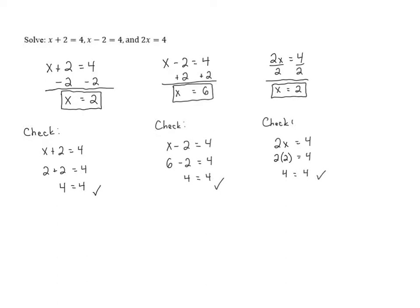In each of these problems, the goal was to get x alone. However, the steps it took to get x alone were different in each problem. In the first problem, we subtracted 2 from both sides to get rid of the 2 being added to x. In the second, we added 2 to both sides to get rid of the 2 being subtracted. In the third, we divided both sides by 2 to get rid of the 2 being multiplied by x. In general, to solve an equation, you need to do the opposite of whatever is being done to x. These equations each only took one step, but we'll see many examples that take multiple steps, and we'll discuss strategies for solving those.